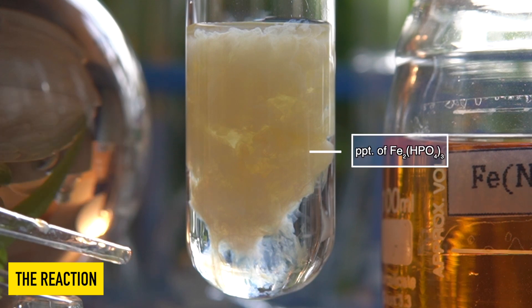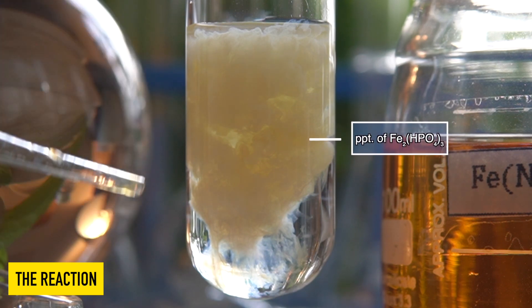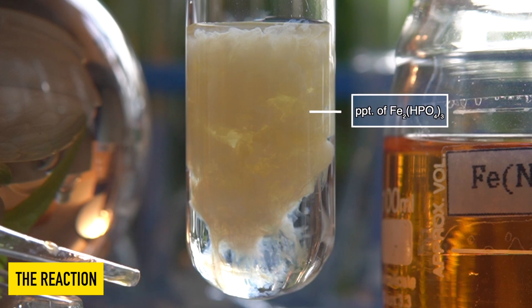The yellowish-brown solid that has been formed inside the test tube is iron three phosphate.